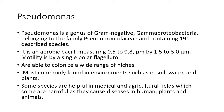Pseudomonas is actually a genus of gram-negative bacteria — gamma proteobacteria which belong to the family Pseudomonadaceae and they contain around 191 described species. Pseudomonas is actually aerobic bacilli, that means rod-shaped bacteria which measures 0.5 to 0.8 micrometer by 1.5 to 3 micrometer. Motility is by a single polar flagellum. In short, Pseudomonas is gram-negative, rod-shaped bacteria with a polar flagella and it is aerobic.